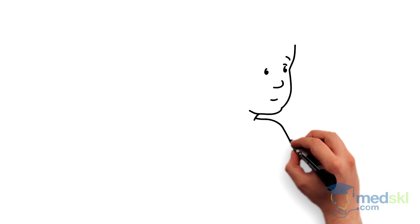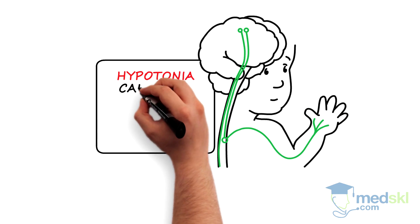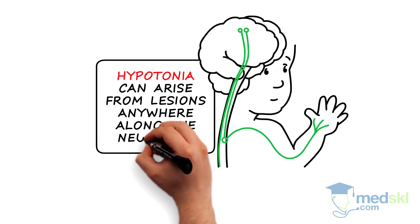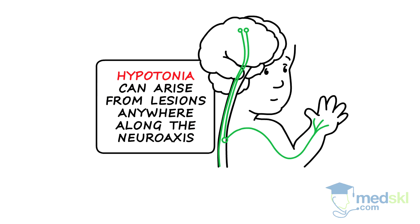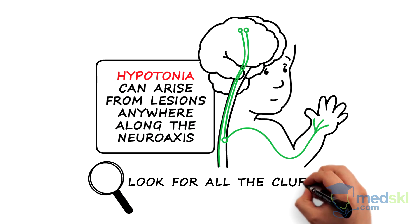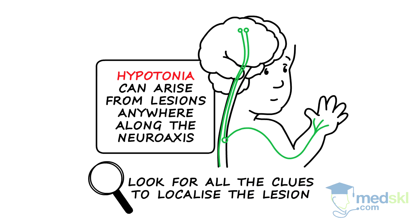In summary, hypotonia in an infant can arise from lesions anywhere along the neuroaxis. Make sure you look for all the clues to localise where the lesion is.